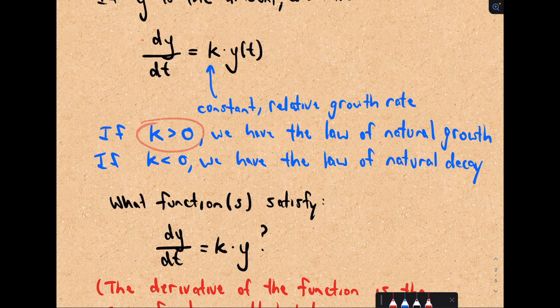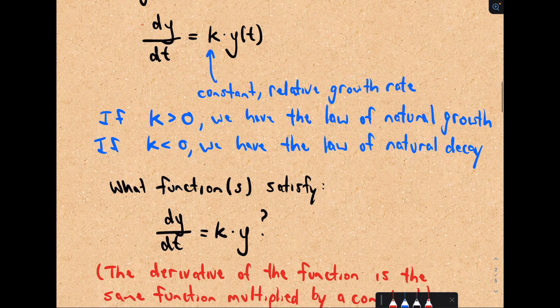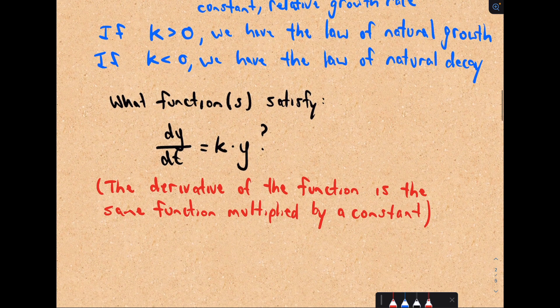If k is greater than zero, we have what's known as the law of natural growth, because the rate of change will be positive. And if k is less than zero, the rate of change will be negative, and you have what's known as the law of natural decay.